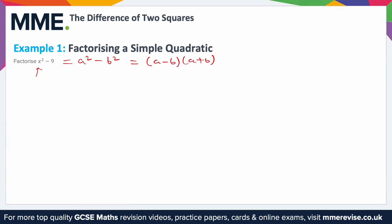So what we can do is set x squared equal to a squared, and 9 equal to b squared. From there, if we can find a and b, then it will be relatively straightforward. Square root both sides of the first equation — the square root of x squared is just x, and the square root of a squared is just a, so a is x.